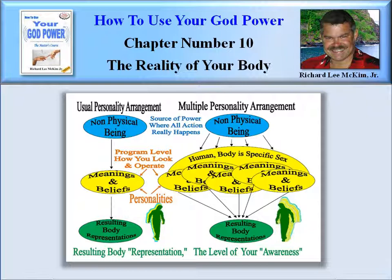Now with a multiple personality, you have the main program — just like we saw in the music player — which is a male human body. Then you can see here it's got five different personality settings, or five different faces, or five different personalities, five different meaning sets — meanings and beliefs sets. In one of these meanings and beliefs, that male human body could have high blood pressure, could have bad eyesight, could have some scars, could like to eat this and be allergic to that.